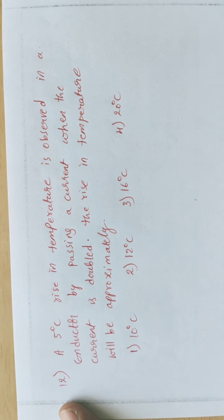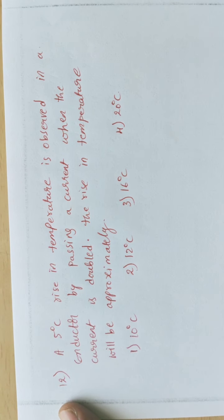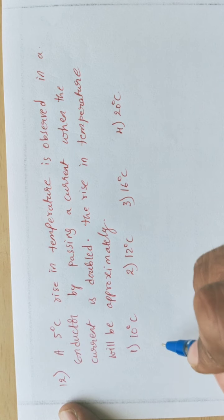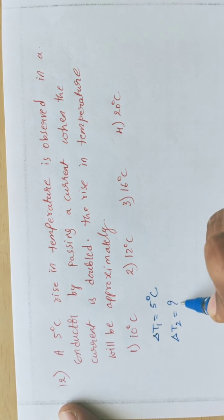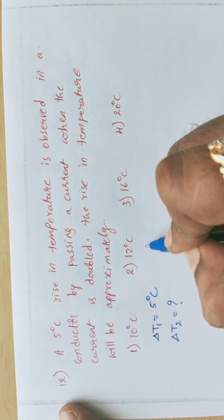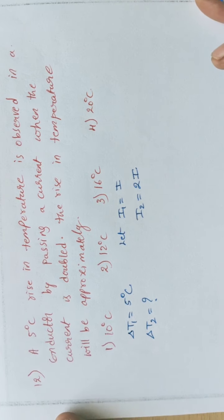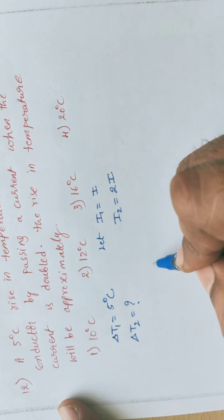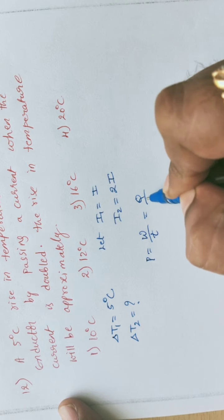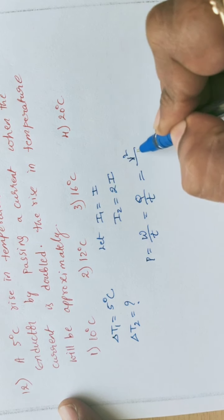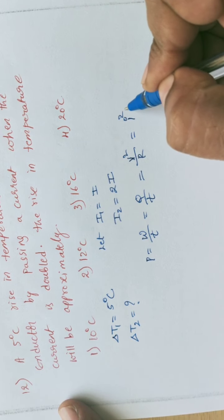Problem 5. A five degree rise in temperature is observed in a conductor by passing a current. When the current is doubled, the rise in temperature will be approximately how much? Initially delta T1 equals 5 degrees C. Current I1 equals I, and I2 equals 2I.